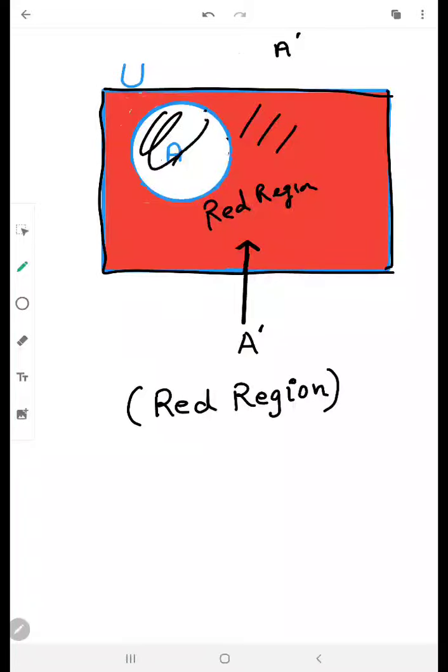Now here this is A. So what is A-Complement? Just leave this set, whatever is left in U that will be considered as A complement. So this red region is representing the A complement.